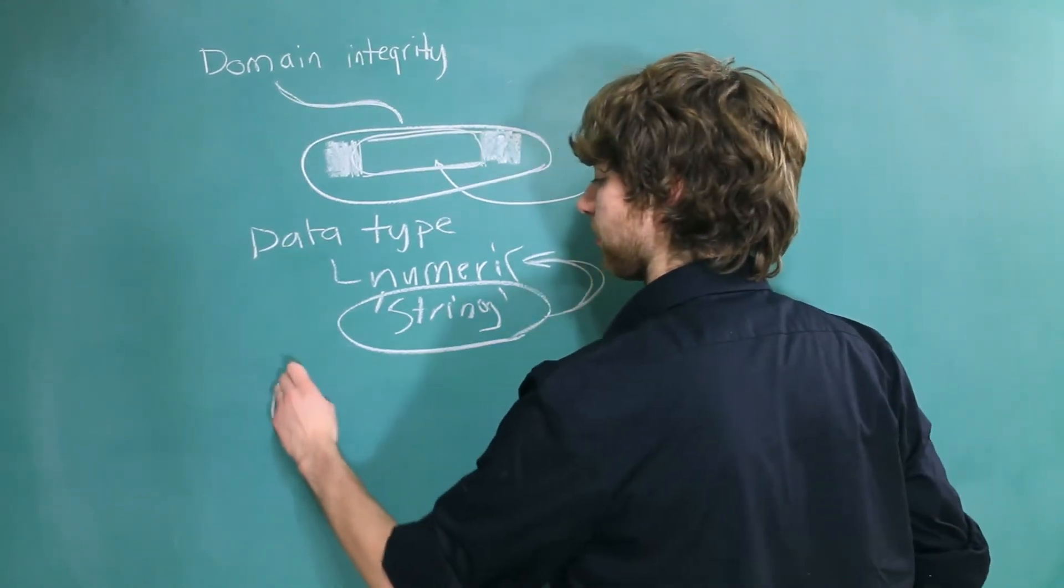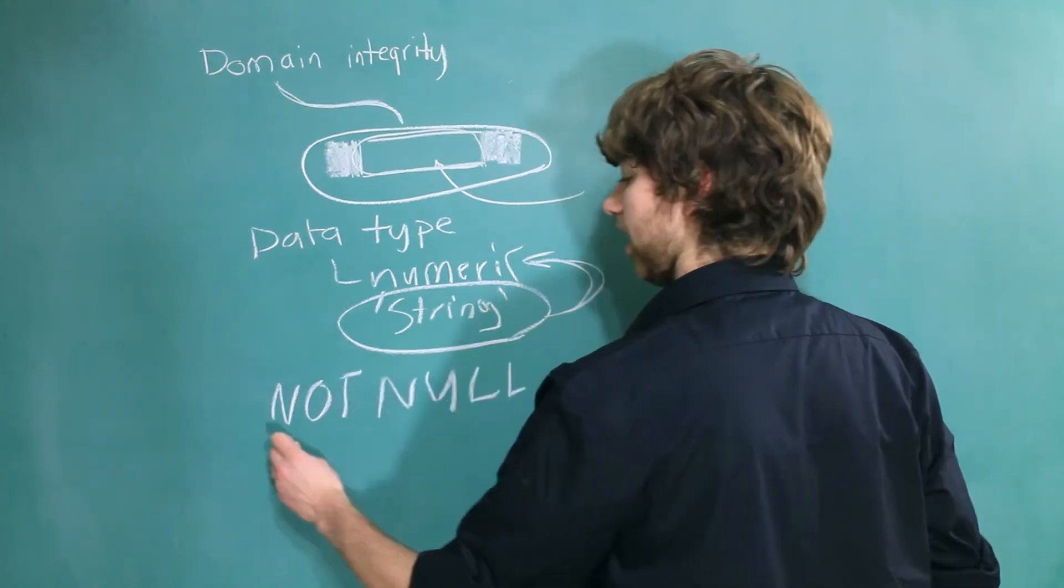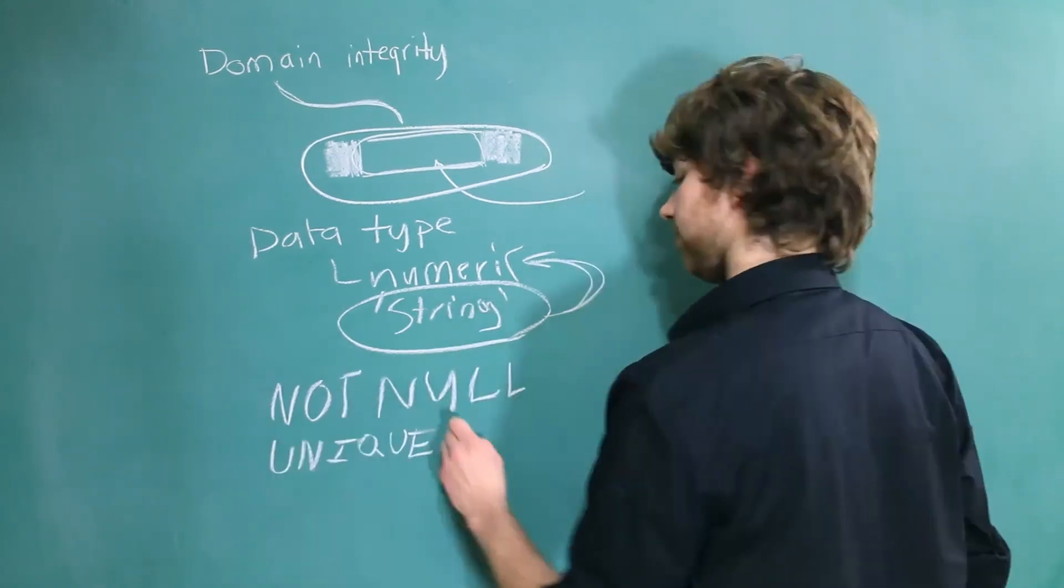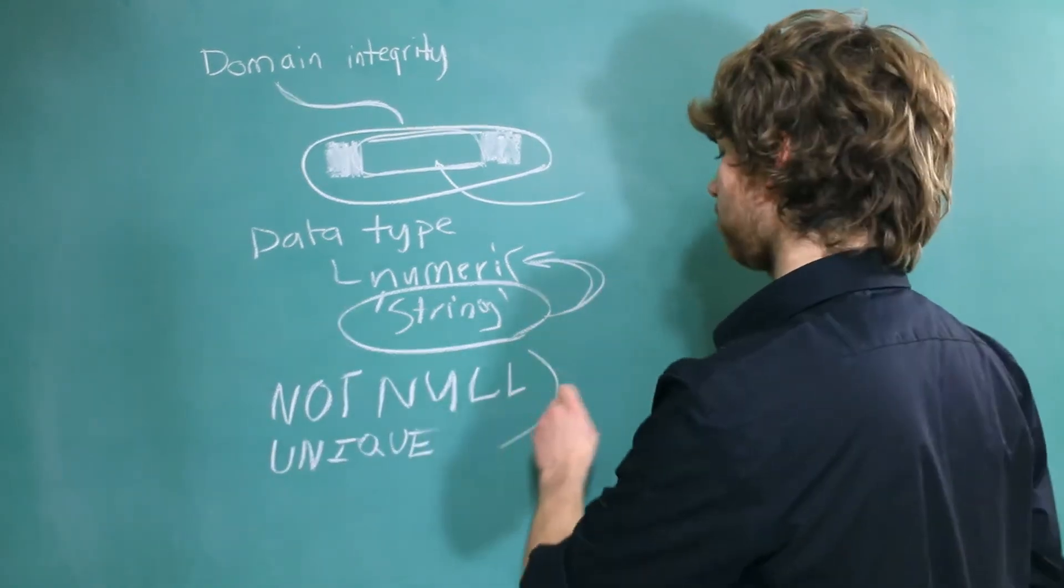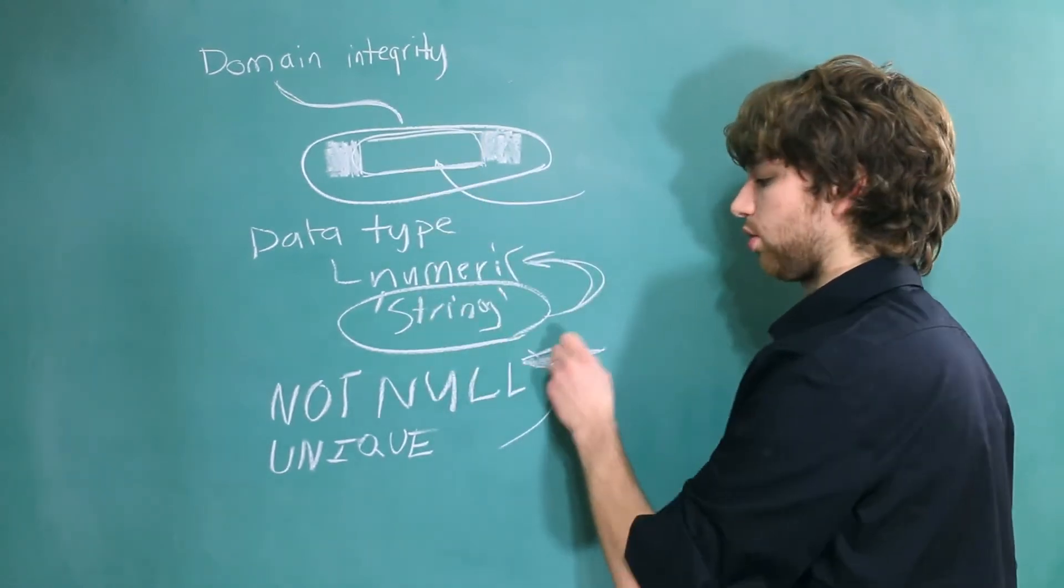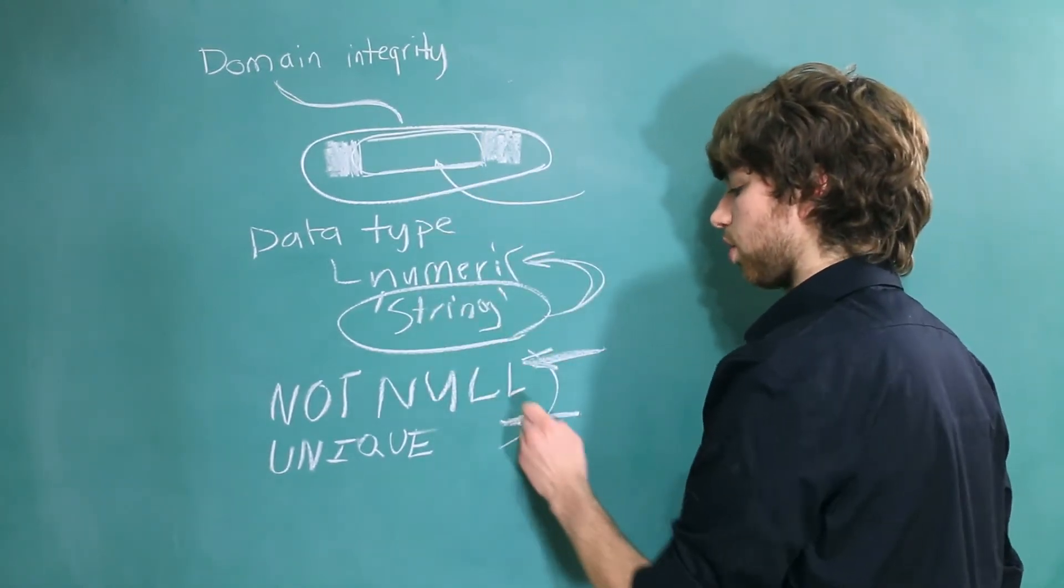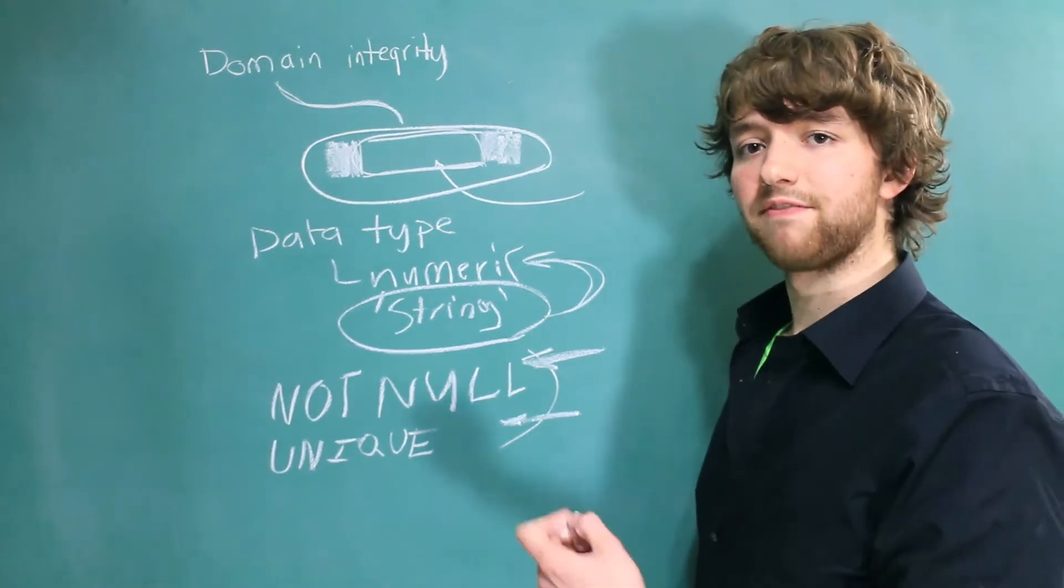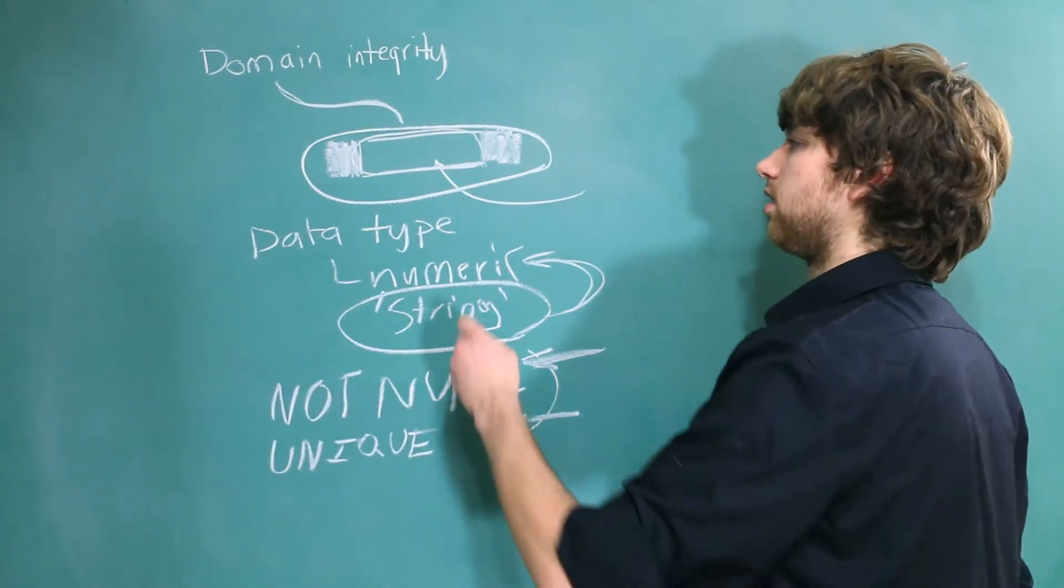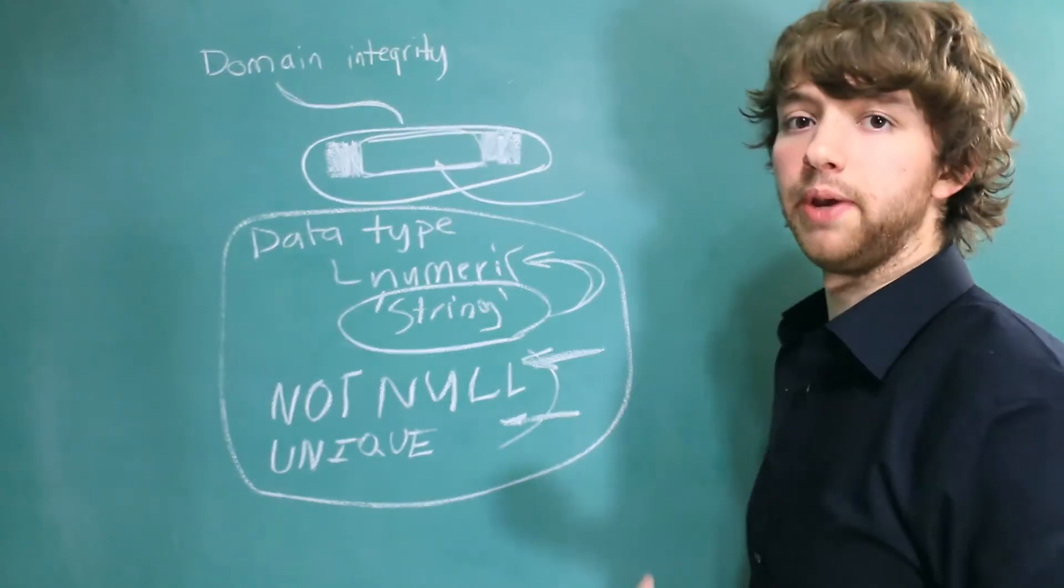Obviously, the two constraints we talked about, not null and unique, these can also be used to help with the domain integrity because we can force every single row to have a value or for every single row to have a unique value. That further restricts the data. All of these are the simple way of protecting our domain.